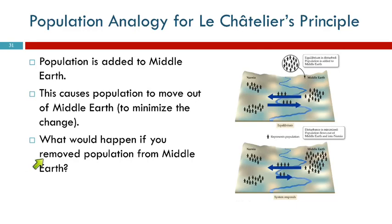What if you removed population from Middle Earth? An epidemic of diphtheria happens in Middle Earth and a whole bunch of people die. Well, there's less population here. The rate of moving to Narnia decreases, and more people are going to move to Middle Earth once it's not contagious anymore.